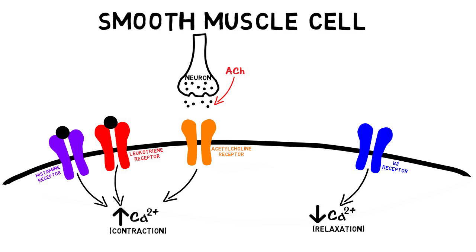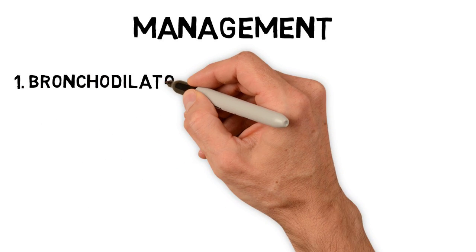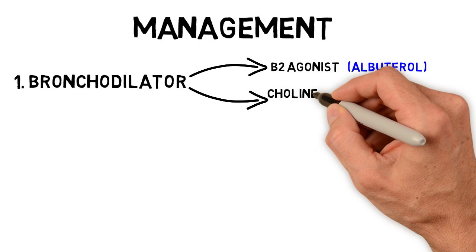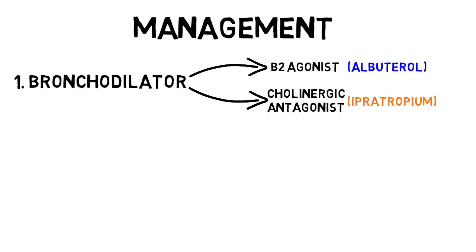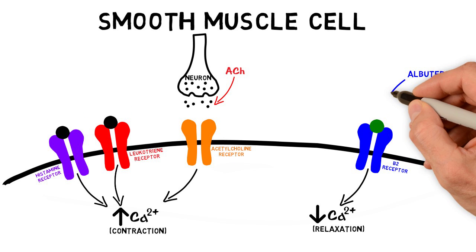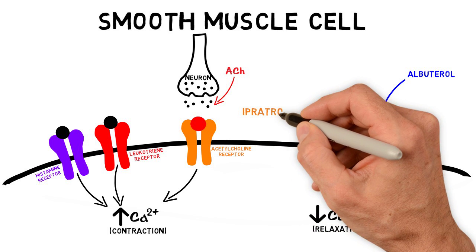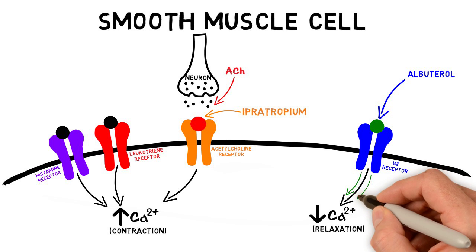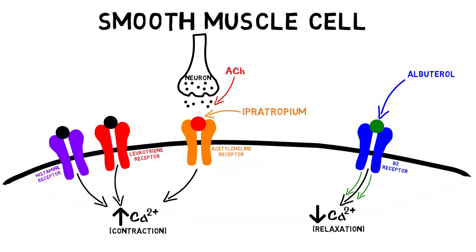First-line therapy is typically a combination of an inhaled beta-2 agonist, like albuterol, and an inhaled muscarinic antagonist, like ipratropium. These work to counteract the effects of histamine and leukotrienes. Let's look back at the smooth muscle cell — there are beta-2 receptors where albuterol binds, and acetylcholine receptors where ipratropium binds. Albuterol leads to smooth muscle relaxation by decreasing intracellular calcium, and ipratropium prevents acetylcholine from binding, impairing smooth muscle contraction. The peak effect is within 15 to 30 minutes.